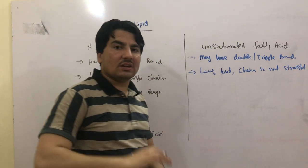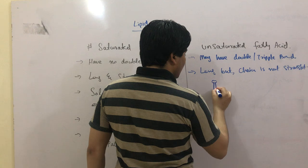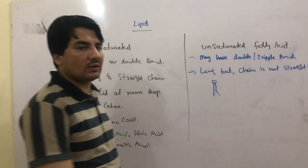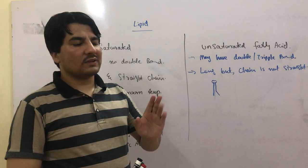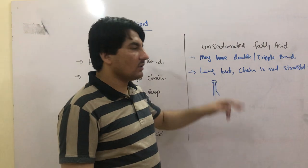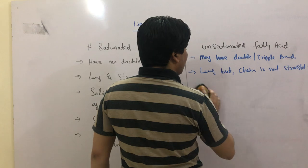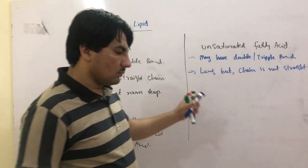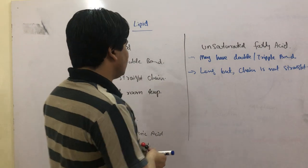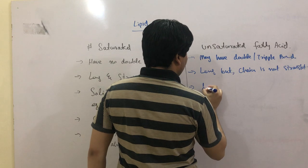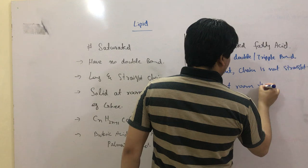When there is a straight chain and you have a double bond, the chain bends. So the chain is not straight - when there is a double bond, the chain bends. These are liquid at room temperature.